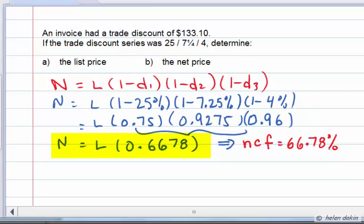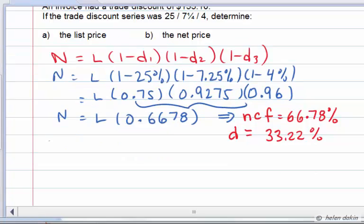That's interesting because that also tells us that the single equivalent discount rate, that is the same as the trade discount series of 25, 7.25, and 4%, must have been 33.22%. Now, is this information going to be useful to us?